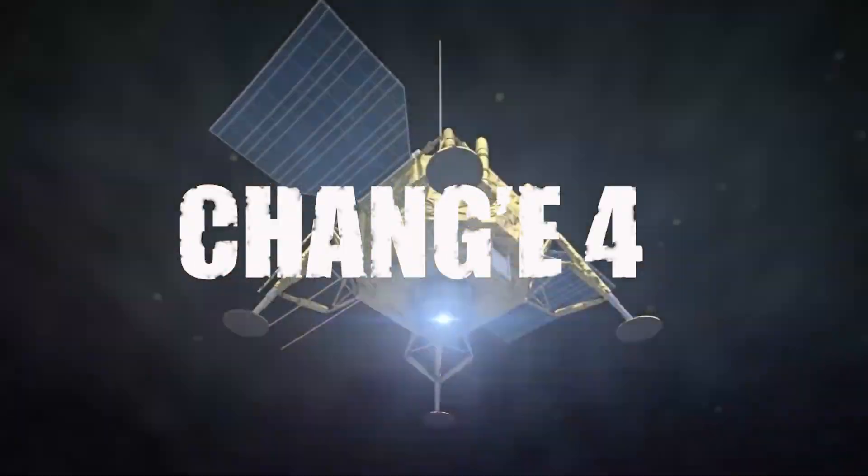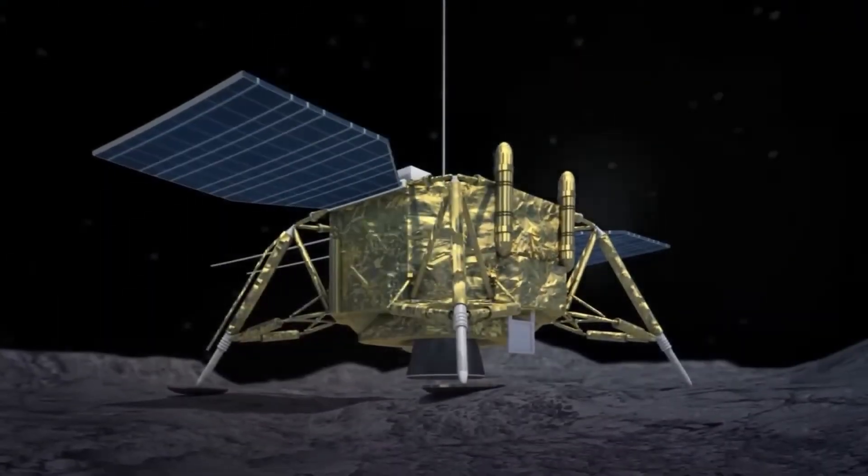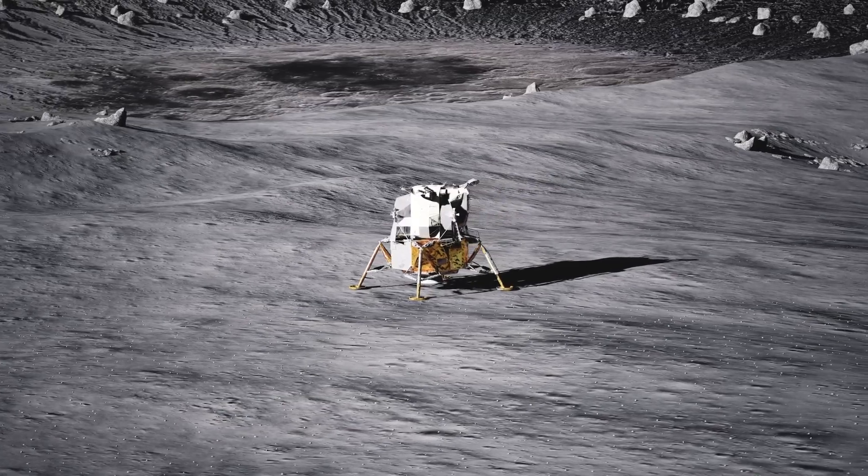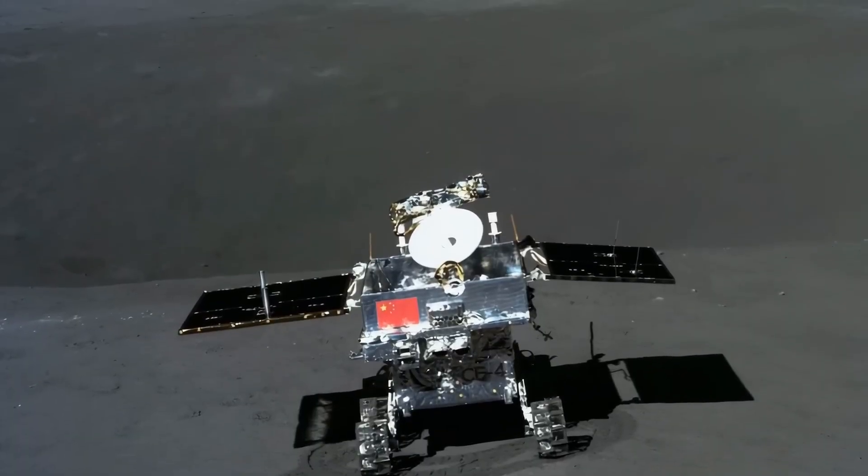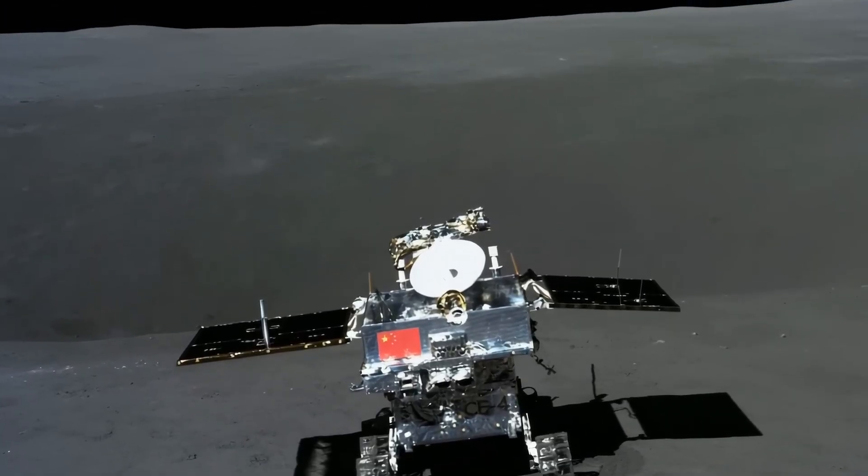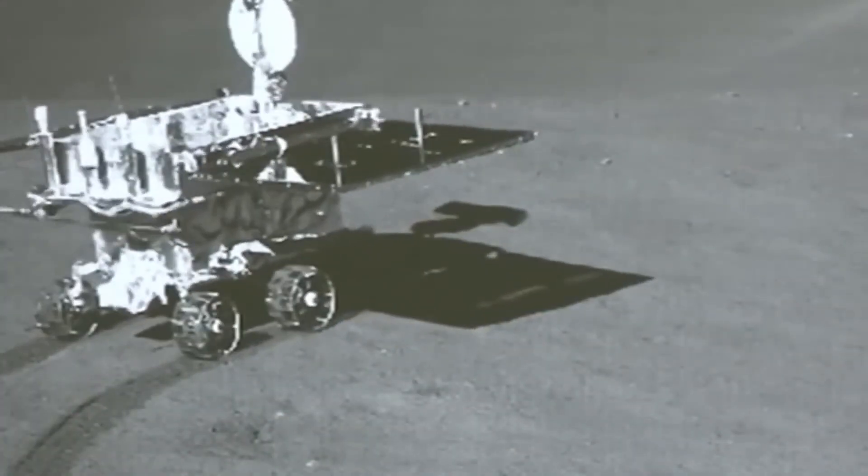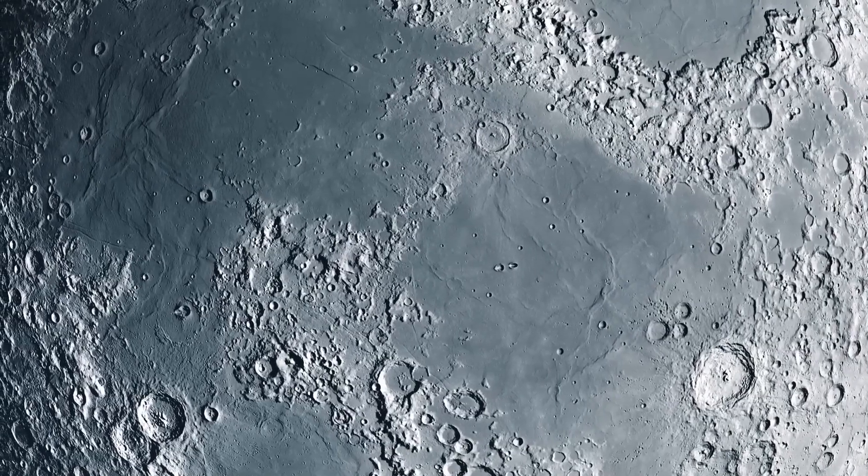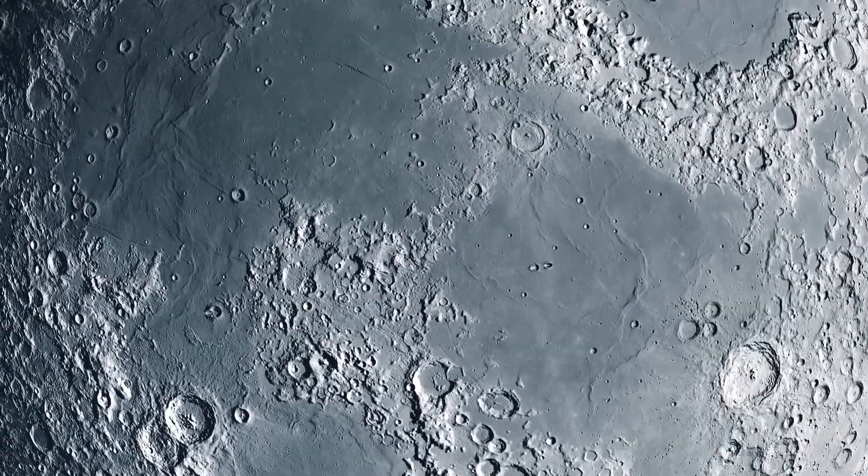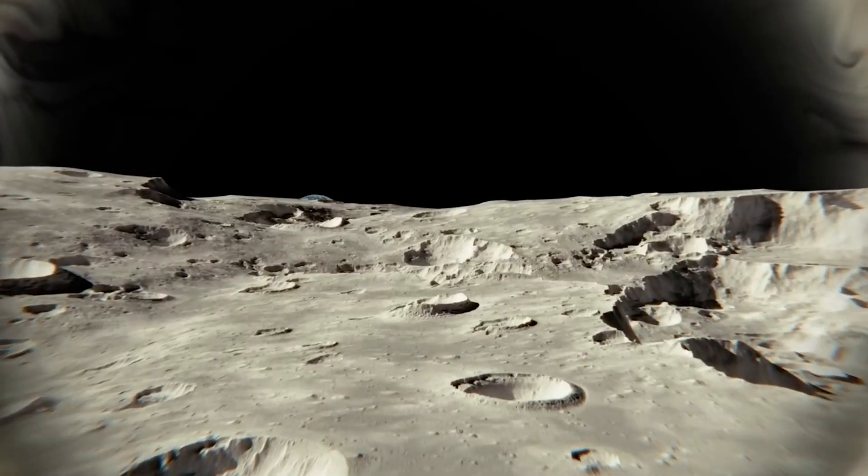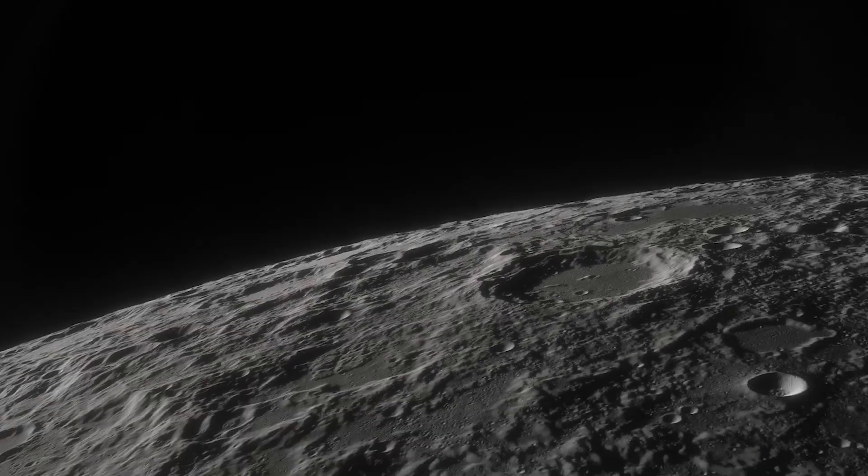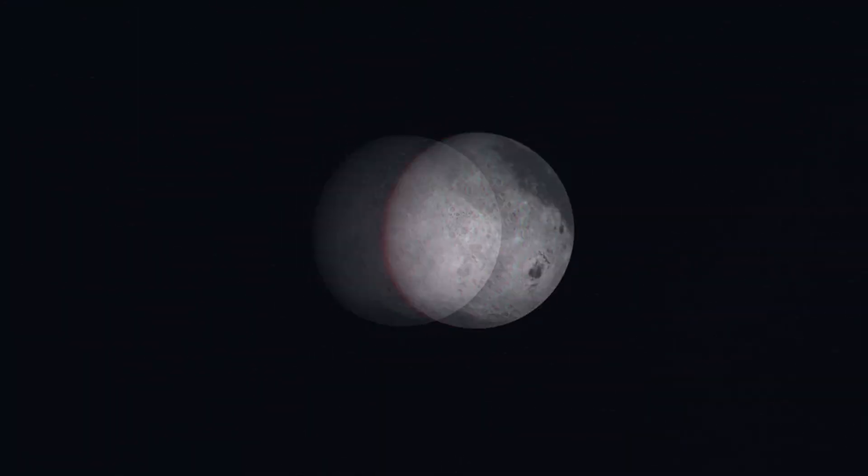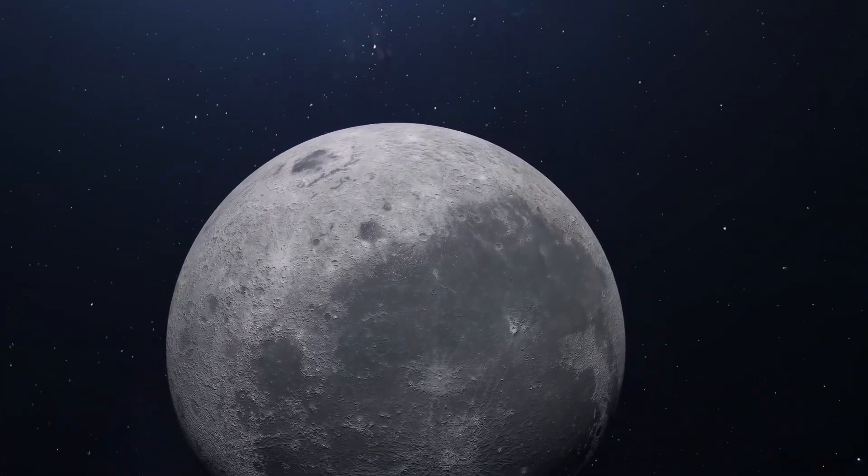That's when Chang'e 4 became the first spacecraft in human history to land on the far side of the moon. It touched down in the Von Kármán Crater, deep inside the South Pole-Aitken Basin, one of the oldest and deepest impact sites in the entire solar system. What China's lander found there was astonishing. The surface was made of material not seen anywhere else, possibly from deep beneath the moon's crust, even the mantle itself. Because the far side isn't just darker, it's geologically distinct. Which raises a disturbing possibility: what if the moon we thought we knew is actually two moons in one?